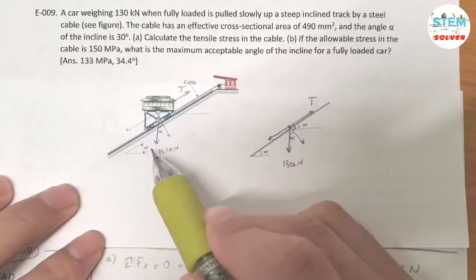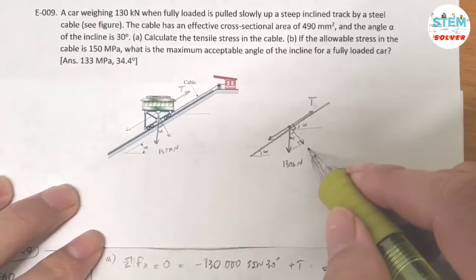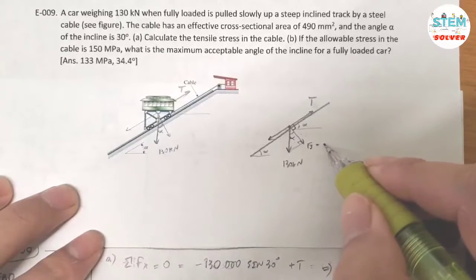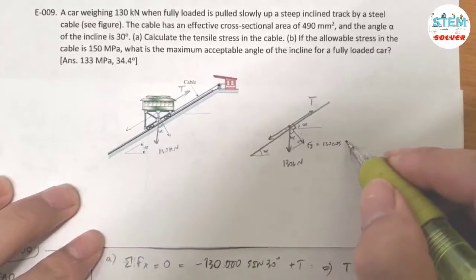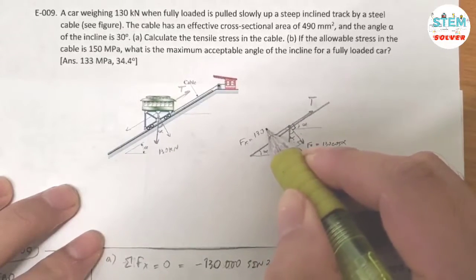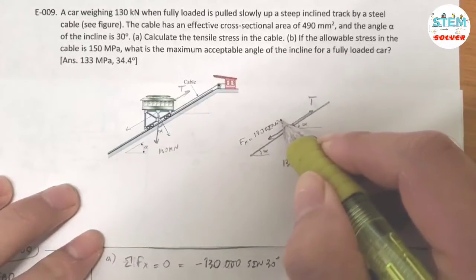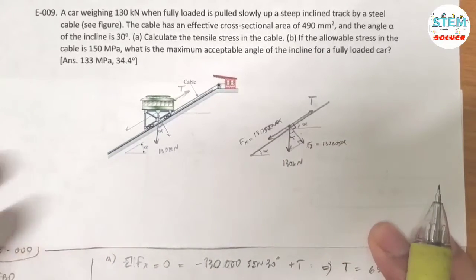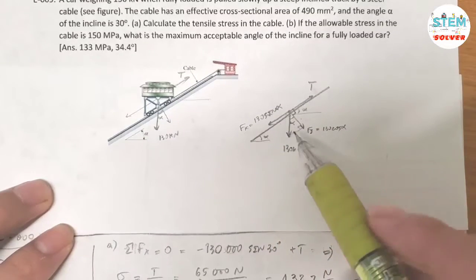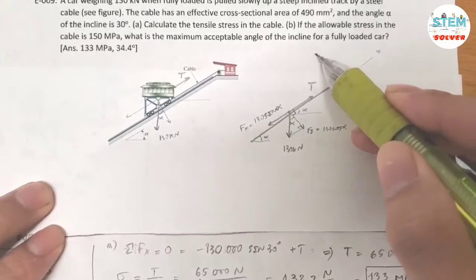This forms a triangle, so the Y direction is equal to 130 times cosine alpha, and this has to be 130 sine alpha. If this is cosine, then this has to be sine. So this is the force in the Y direction, the force in the X direction. Now let's do the summation about the X direction. So I assume this is the X direction, this is the Y direction.